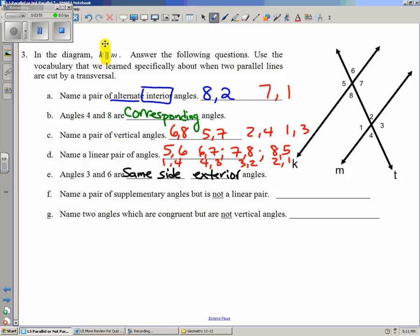So if I went around here, if you notice, angle 6 is acute, angle 5 is obtuse, angle 8 is acute, angle 7 is obtuse, angle 1 is obtuse, angle 2 is acute, angle 3 is obtuse, and angle 4 is acute.